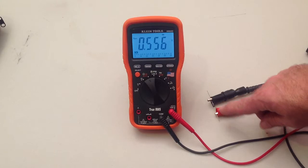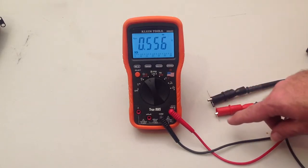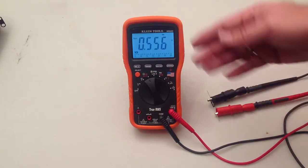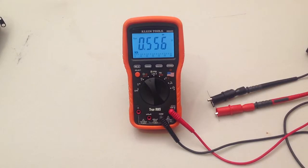So now I'm putting my positive lead on the positive side of the diode. It's letting that voltage go through and it's telling me that 0.55 volts is being dropped across that diode. So the diode is good. It's letting positive voltage go through and only dropping a half a volt.